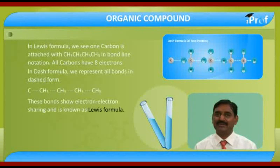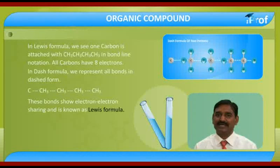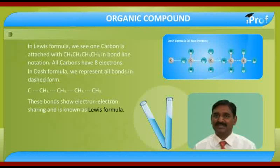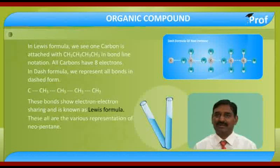In bond-line notation, we represent only bond lines and joints. Bonds are represented by carbon — every joint we represent by carbon — and when we represent all valencies, carbon with hydrogen, then we see all valencies of carbon are satisfied by hydrogens.